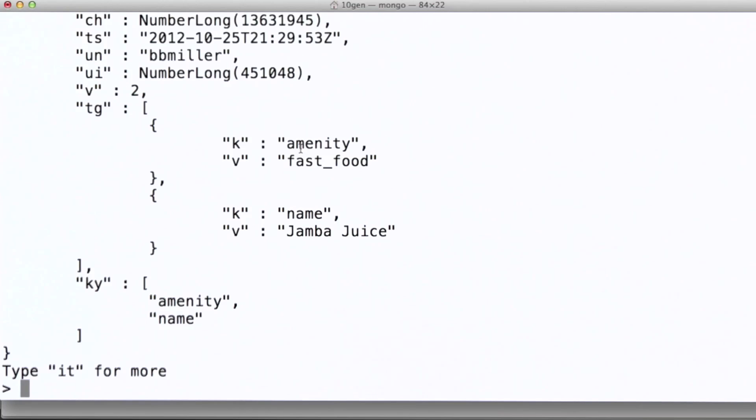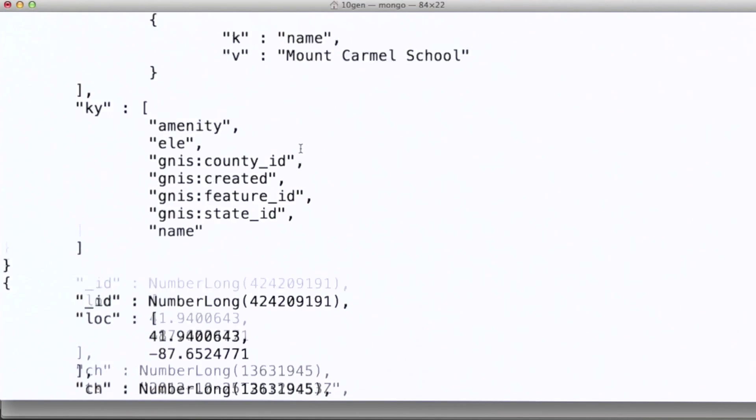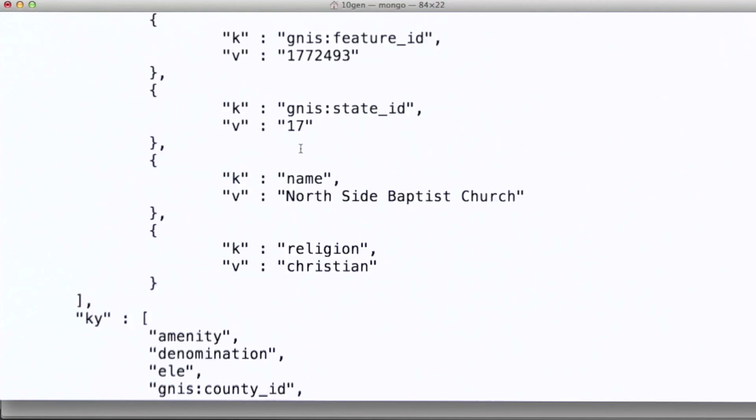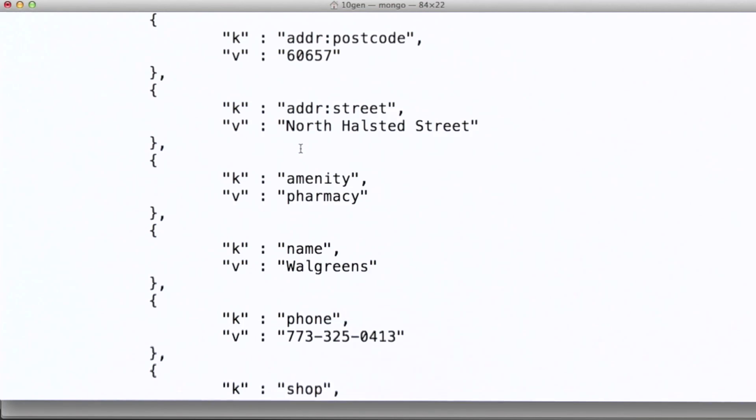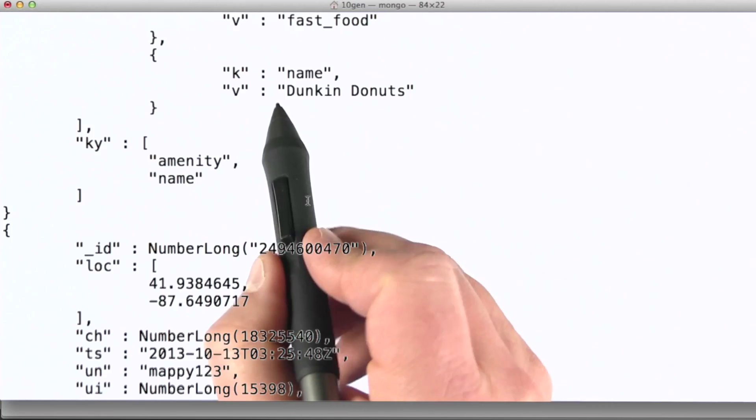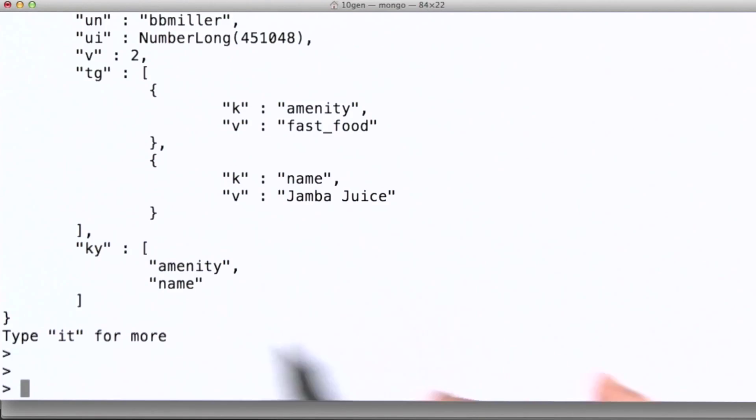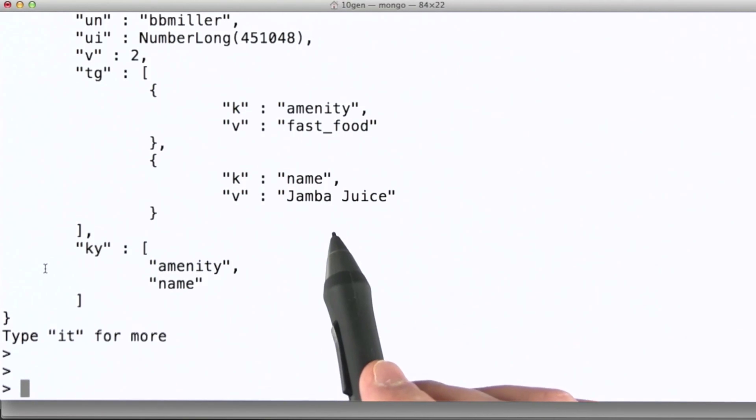Here's our initial set of results. We could get more by typing IT here in the shell. We can see there's a Jamba Juice, a school, church, convenience store. In this case, happens to be a Walgreens, Domino's Pizza and a Dunkin Donuts. That's pretty much what you need to know in order to build geospatial indexes in MongoDB. We'll take a look at using geospatial indexes in the case study in the next lesson.